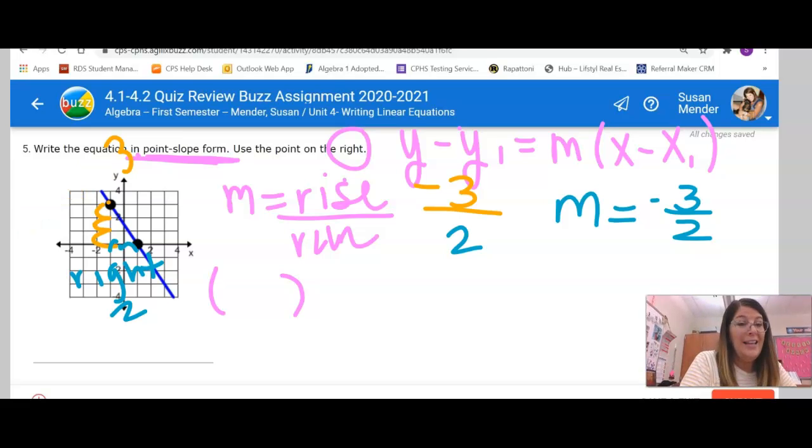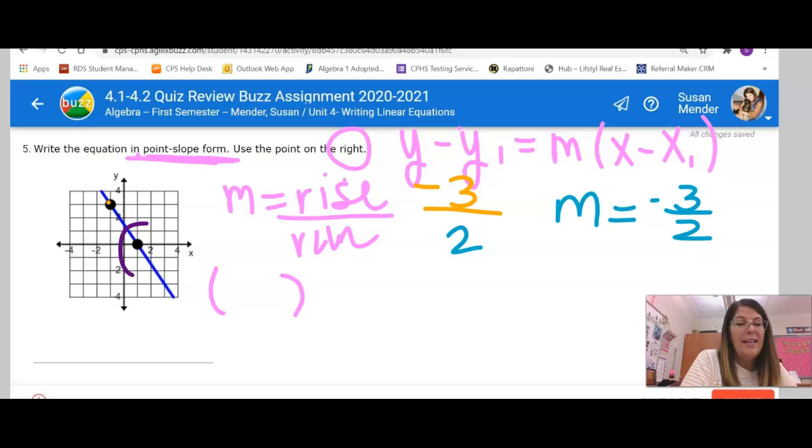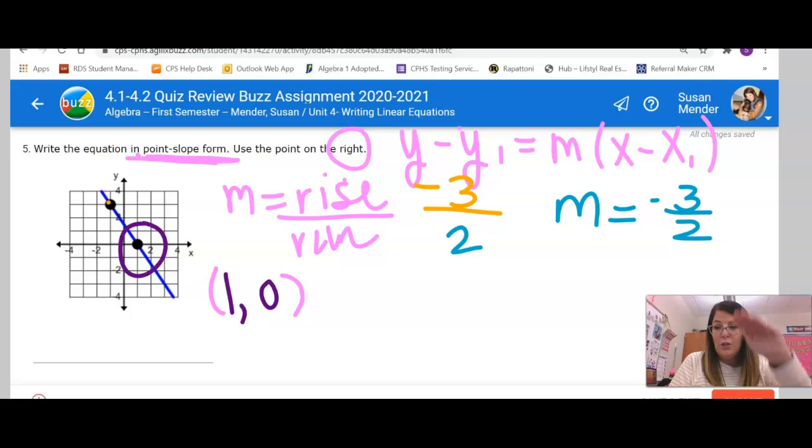Now, the next thing I need to be able to do is name the coordinates of this ordered pair. When I look at this ordered pair, it is over one and zero. You know when you do your slope, you do the up and down, and then you do the right-left. When you're naming an ordered pair, you do the right-left, and then you do the up and down. So sometimes people get confused with that.